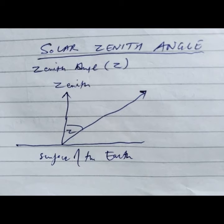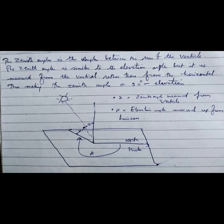The zenith angle is shown in this diagram, from the vertical direction to the sun's elevation angle. The zenith angle is the angle between the sun and the vertical. It is similar to the elevation angle, but it is measured from the vertical rather than from the horizontal.